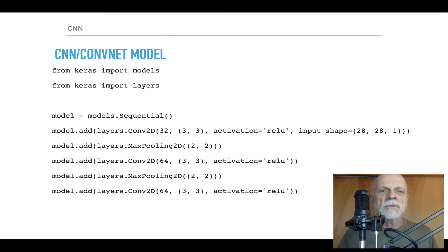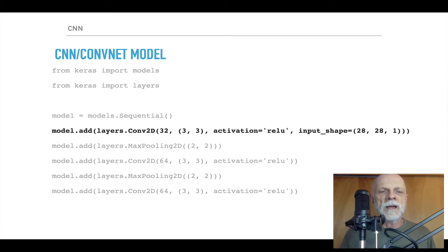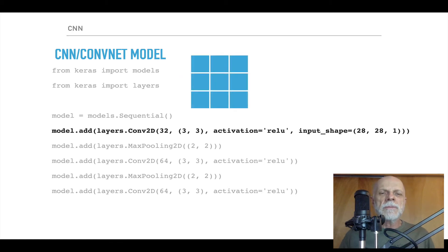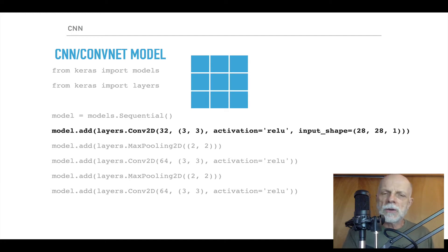Here's what a convolution model will look like. We're going to look at that first line of interest, which is that we're adding a convolutional, two-dimensional convolution layer. That 3 by 3 in that layer means we're going to be looking at only a 3 by 3 patch or window of the full picture — not the whole picture, just a small part of it.